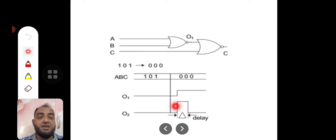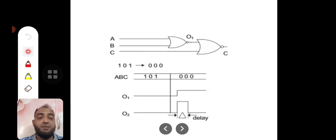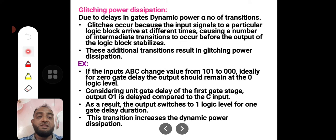Now these transitions - transition one and transition two - both should not have happened. It should have continuously stayed at zero. Because of this delay, these two transitions took place, which causes unnecessary power dissipation.